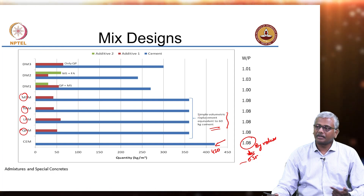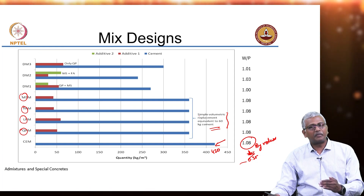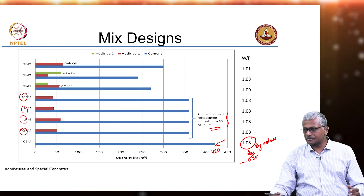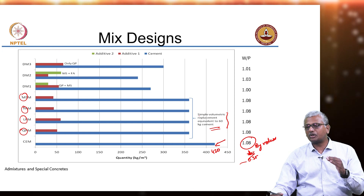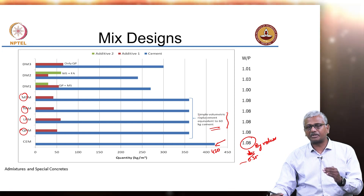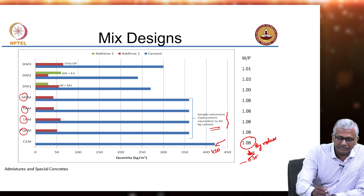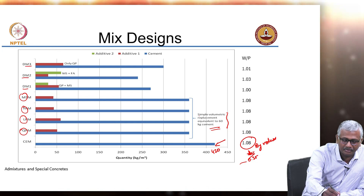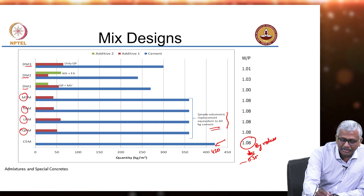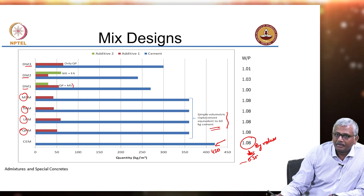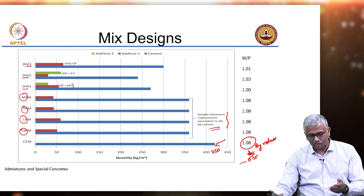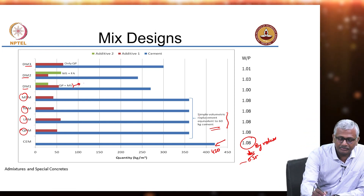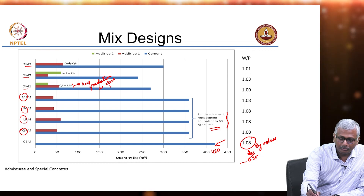To adopt a particle packing approach, we looked at how the particle gradation of the combined granular particles — aggregates, cement, and mineral additive combined — differed from the ideal gradation as prescribed by the modified Andreessen model. We came up with three mixtures named Design Mix 1, 2, and 3. Design Mix 1 had a combination of quartz powder and micro silica, proportioned to keep the combined gradation as close to the ideal gradation as possible.